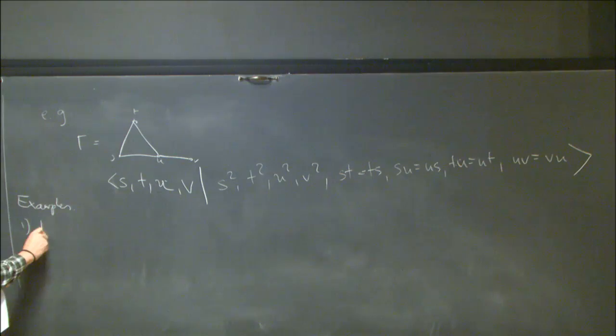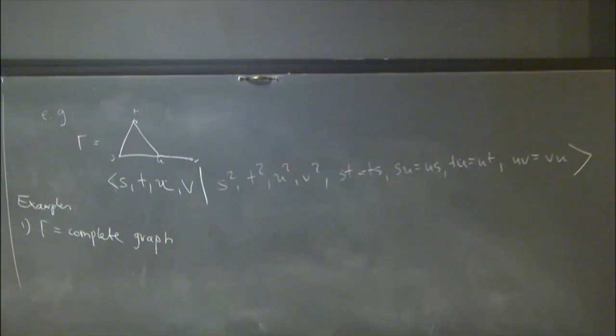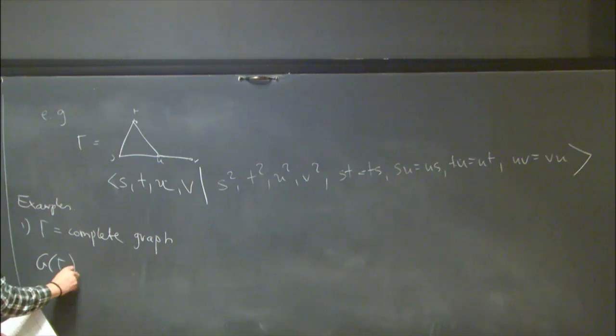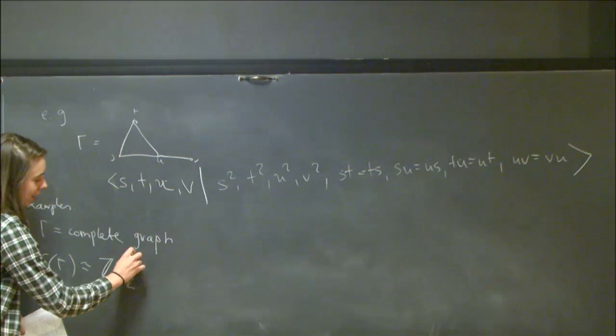One family of examples: if we take gamma to be the complete graph — meaning every two vertices are joined by an edge — then every pair of generators commutes, so what we get is just (ℤ/2ℤ)^n, where n is the number of vertices of gamma.